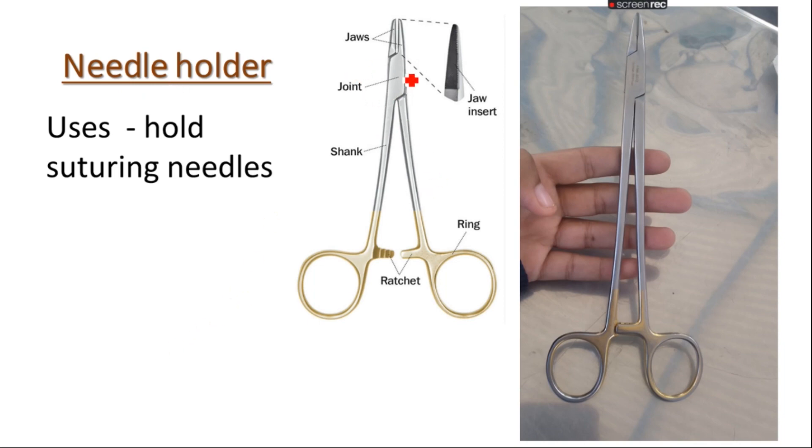If we talk about the particular parts of the needle holder, these are jaws, joints, shank, ratchet, the rings, and the jaw inserts.